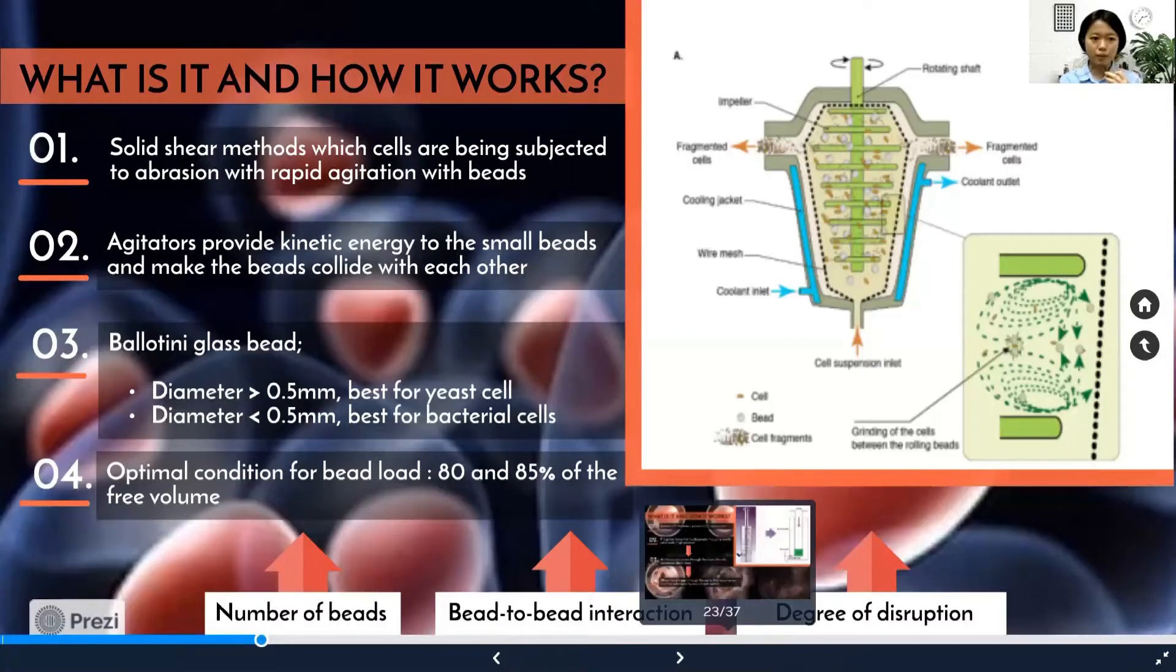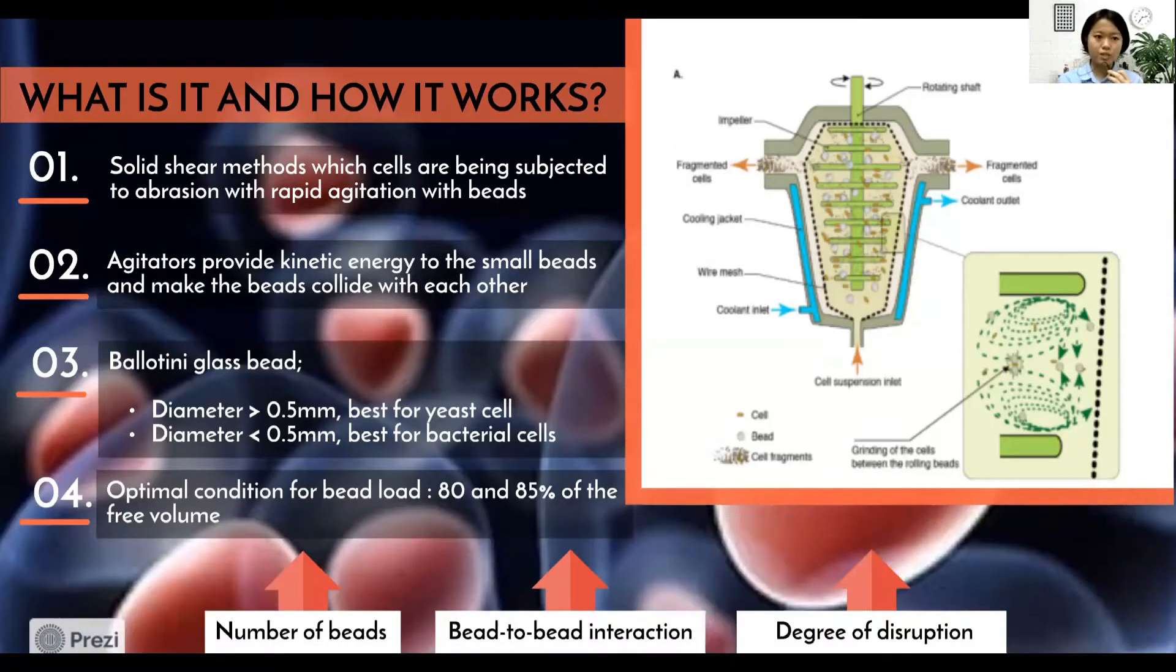The first method is bead mill. It is a solid shear method where cells are subjected to abrasion with rapid agitation with beads. It consists of a jacketed grinding chamber with a rotating shaft running in its center. Agitators are fitted with the shaft and provide kinetic energy to small beads, making the beads collide with each other. Ballotini glass beads are typically used, and the choice of bead size is greatly dependent on the type of cell. The increased number of beads increases the degree of disruption due to increased bead-to-bead interaction.